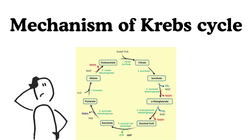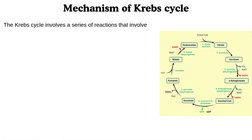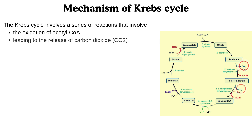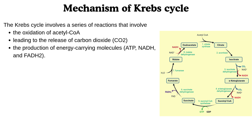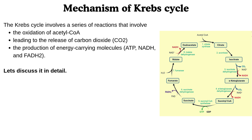What is the mechanism of the Krebs Cycle? The Krebs Cycle involves a series of reactions that involve the oxidation of acetyl coenzyme A, leading to the release of carbon dioxide, and the production of energy-carrying molecules like ATP, NADH, and FADH2. Let's discuss it in detail.